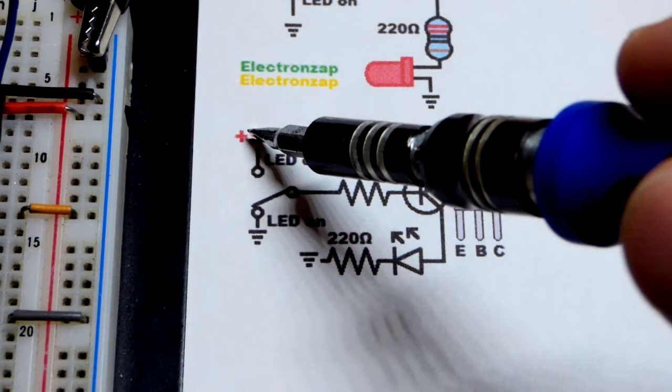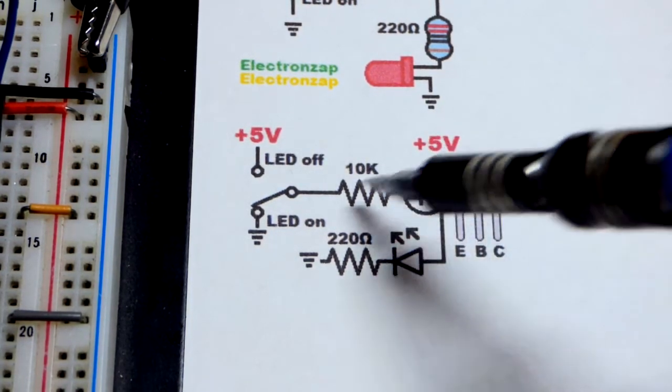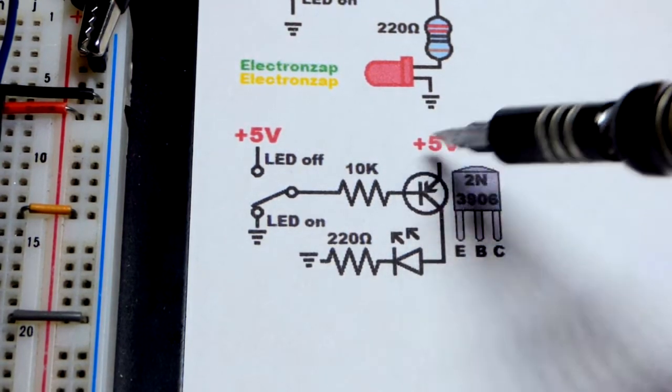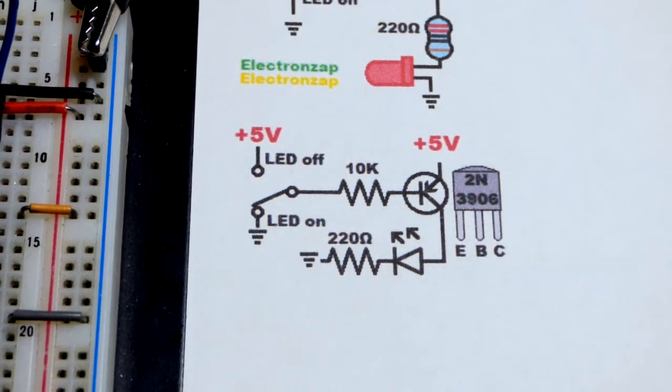And then if we go to the positive supply, we got positive 5 volts there. Positive 5 volts there, no current will flow. So they're at an equal voltage. No emitter to base current. Then there's no emitter to collector current. It's that simple.